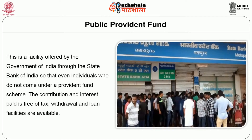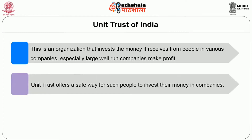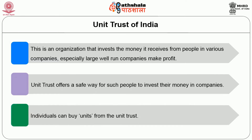Then we will see the public provident fund. This is a facility offered by the government of India through the State Bank of India so that even individuals who do not come under the provident fund scheme can save. The contribution and interest paid is free of tax, and withdrawal and loan facilities are available. Then unit trust of India. This is an organization that invests the money it receives from people in various companies, especially large well-run companies, to make profit. Unit trust offers a safe way for people to invest their money in companies. Individuals can buy units from the unit trust.